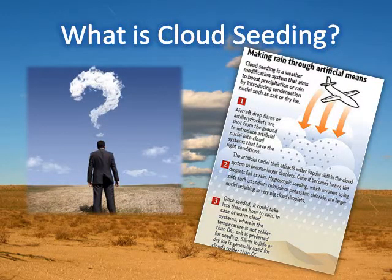Cloud seeding is a form of weather modification aimed at increasing rainfall or snow in a given area. Particles are dispersed into clouds in order to increase precipitation. There are two types of cloud seeding, known as warm and winter.